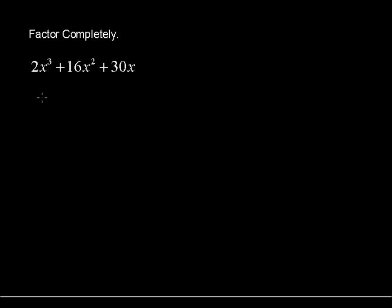Here we're going to factor completely the polynomial 2x to the third plus 16x squared plus 30x. The first thing you want to do when you are factoring a polynomial is to look for the greatest common factor.